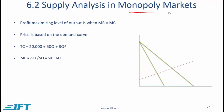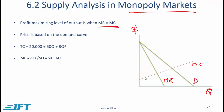Supply analysis in monopoly markets. The profit-maximizing level of output is when marginal revenue equals marginal cost. Looking at the graph with price on the y-axis and quantity on the x-axis, we have the demand curve, marginal revenue, and marginal cost curve. The profit-maximizing quantity is the point where marginal revenue equals marginal cost, and the price is read off the demand curve at that quantity — this is the price that consumers are willing to pay, and therefore the price a monopoly would set to maximize profits.